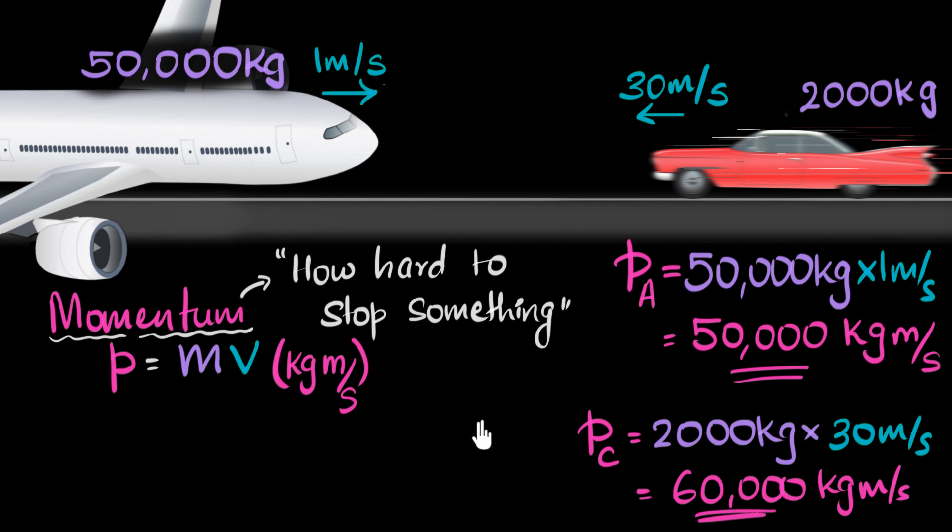So which one is higher? Well, it's the car. The car turns out to have a higher momentum. That means it'll take more effort to stop that car. So even though the car was lighter, much lighter compared to the airplane, it is going so much faster that it turns out it takes more effort to stop it. It has a higher momentum.